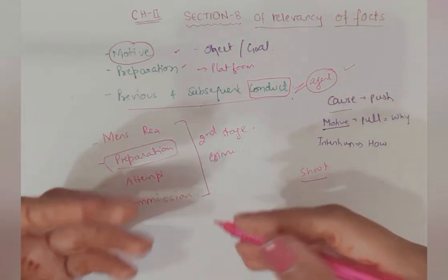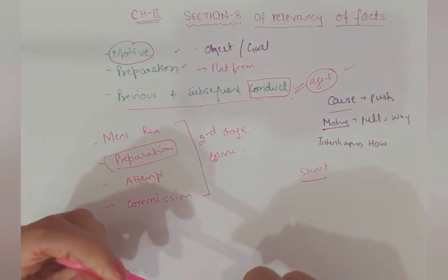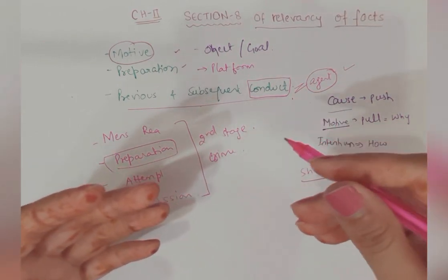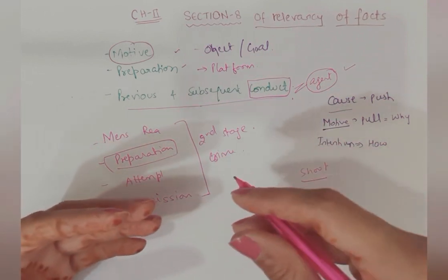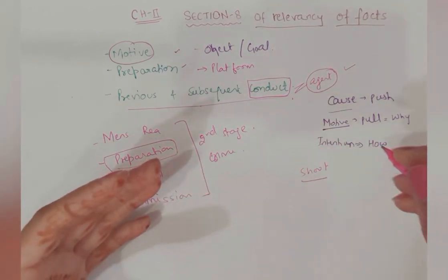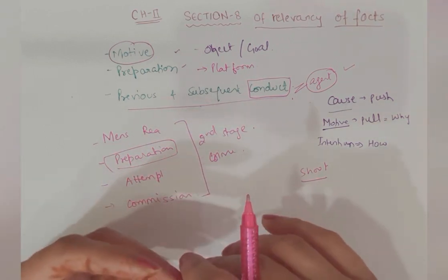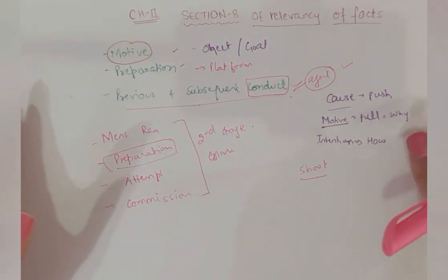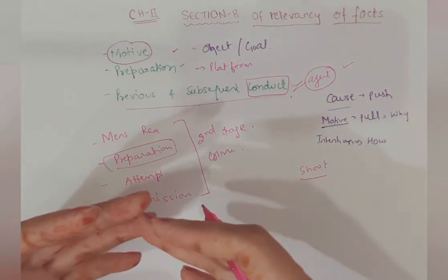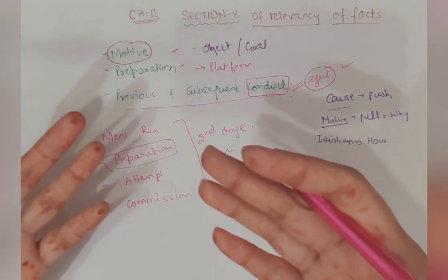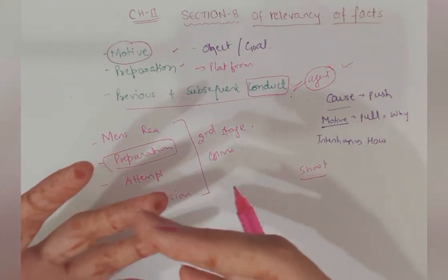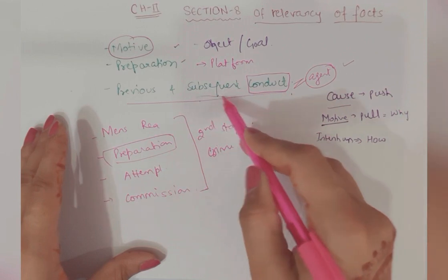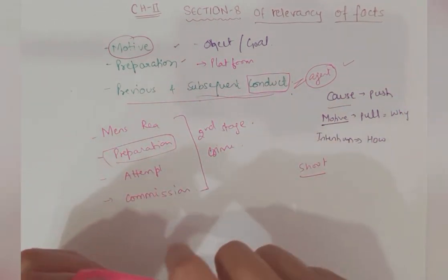For example, if a party or his lawyer or any agent threatens the opposite party or witness, then such conduct is in reference to the suit or proceeding as it relates to an important evidence. If you are hiding evidence, then this becomes a relevant conduct. The party not producing evidence, or party not appearing in court, party taking false plea of alibi, party not producing important documents, accused is absconding - all these will be considered subsequent conduct and these are relevant facts.